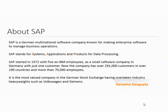SAP is a German multinational software company known for making enterprise software to manage business operations. SAP stands for Systems, Applications and Products for Data Processing. SAP started in 1972 with 5 ex-IBM employees as a small software company in Germany with just one customer. Now the company has over 291,000 customers in over 190 countries and more than 70,000 employees. It is the most valued company in the German stock exchange, having overtaken industry heavyweights such as Volkswagen and Siemens.